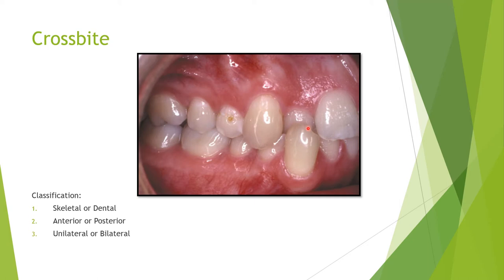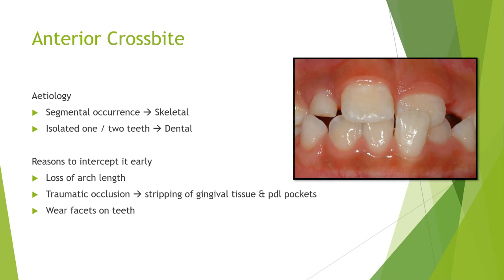A crossbite can involve an anterior or a posterior tooth — anterior meaning mesial to the canine. It can also be unilateral or bilateral. If asked to classify a single tooth anterior crossbite, the answer would be: likely dental origin since it is just a single tooth; anterior; and unilateral or bilateral cannot be determined from only one half of the picture. You must always ask for complete information to make a proper diagnosis.